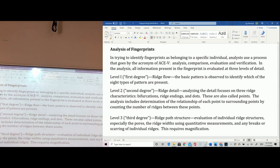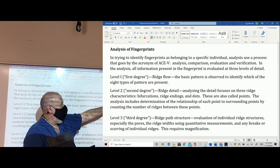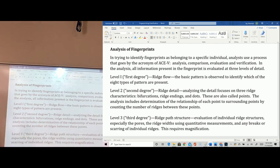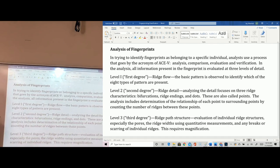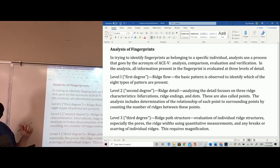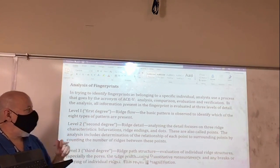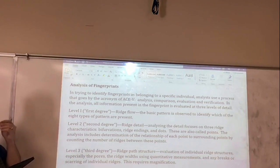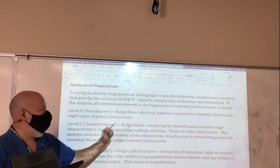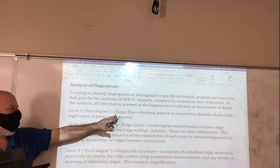When identifying fingerprints as belonging to a specific individual, analysts use a process with the acronym ACEV: Analysis, Comparison, Evaluation, and Verification. This is especially important for the state test and COSA competition. In the analysis stage, all information in the fingerprint is evaluated at three levels of detail. The first degree is ridge flow: the basic patterns observed to identify which of the eight types of ridge pattern are present. The second degree is ridge detail: analyzing bifurcations, ridge endings, and dots — these three main ridge characteristics are also called points.